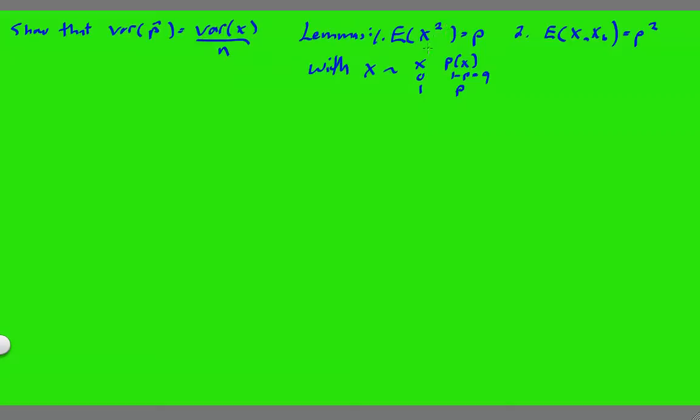Okay, so let's get on with it. Let's prove this first lemma. We'll very quickly show that this is true. The expected value of x squared is by definition the sum, this is for the discrete case, of x squared times p of x.